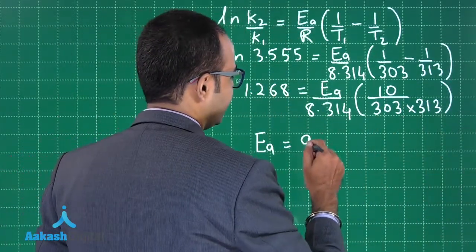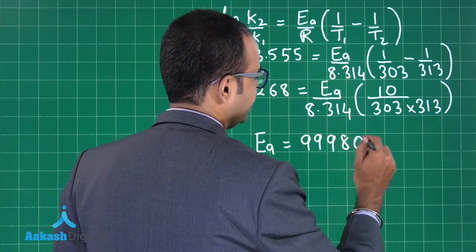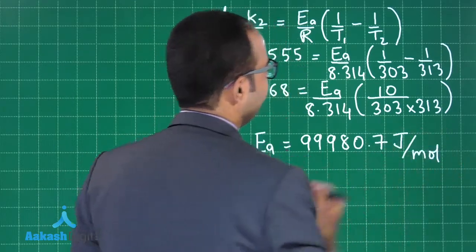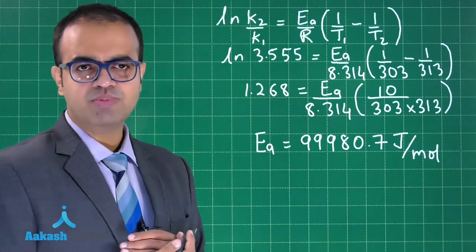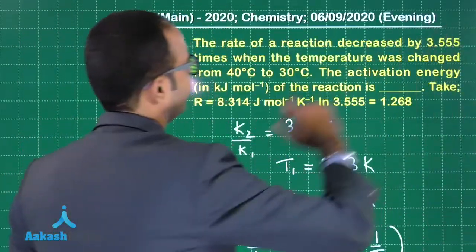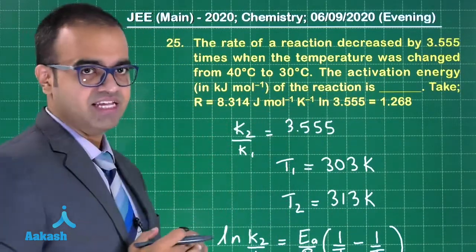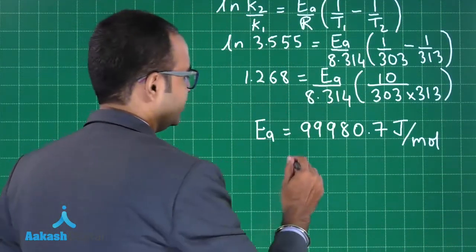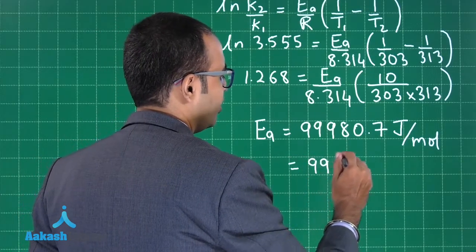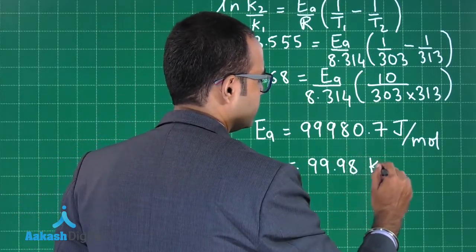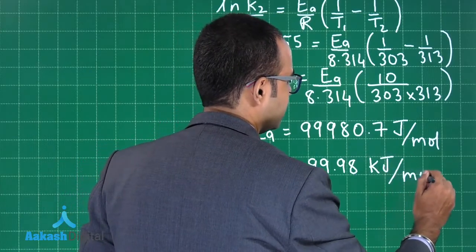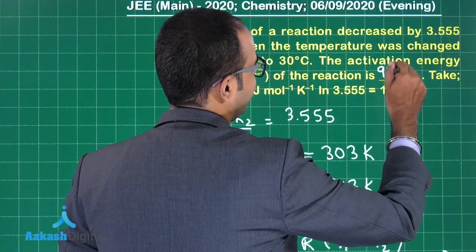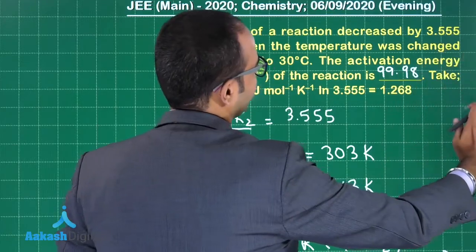The value of Ea on solving this you will get as 99,980.7 J/mol. Do we want the answer in J/mol? Let's see - activation energy in kJ/mol they are asking. We don't want it in J/mol, we want it in kJ/mol. So this is 99.98 kJ/mol. That is our final answer.